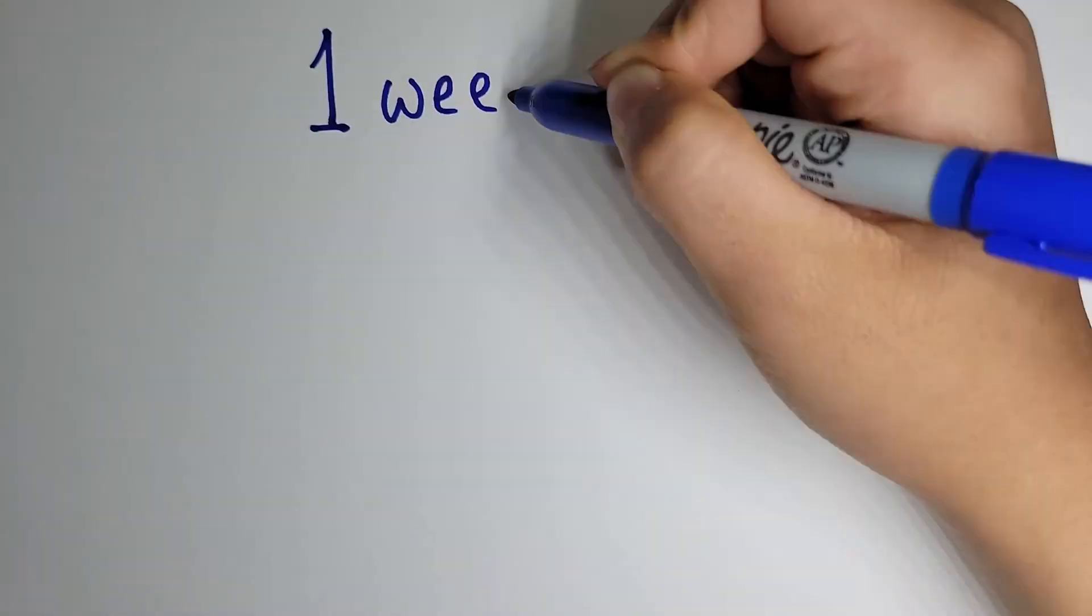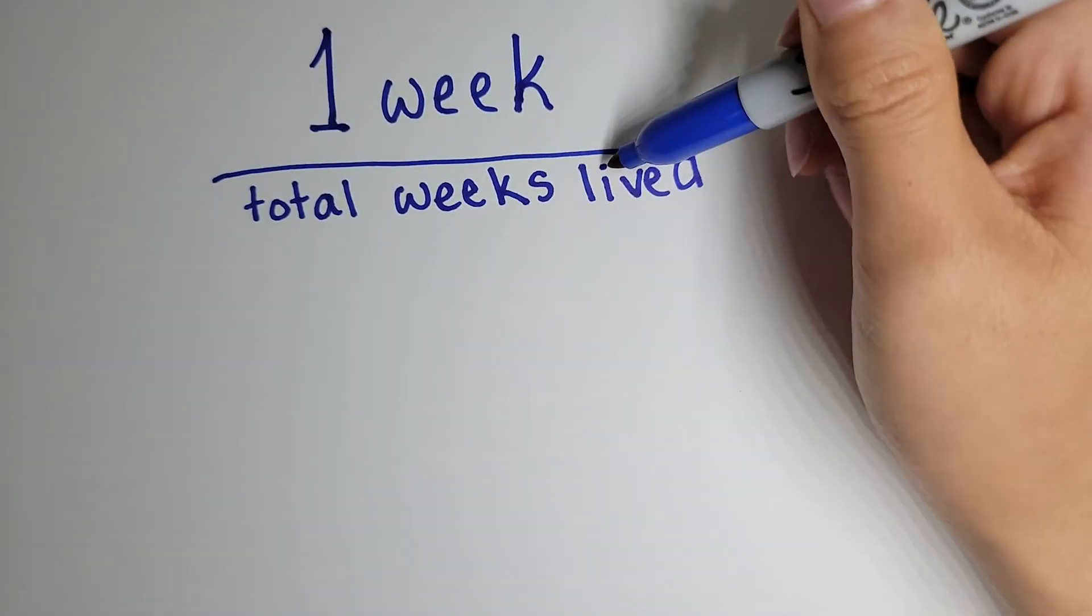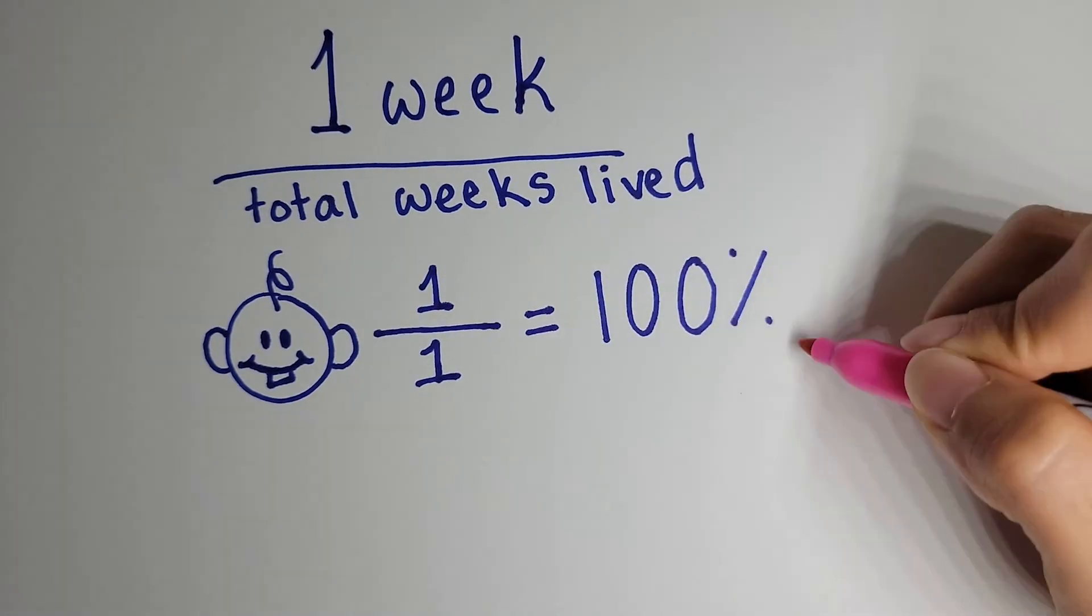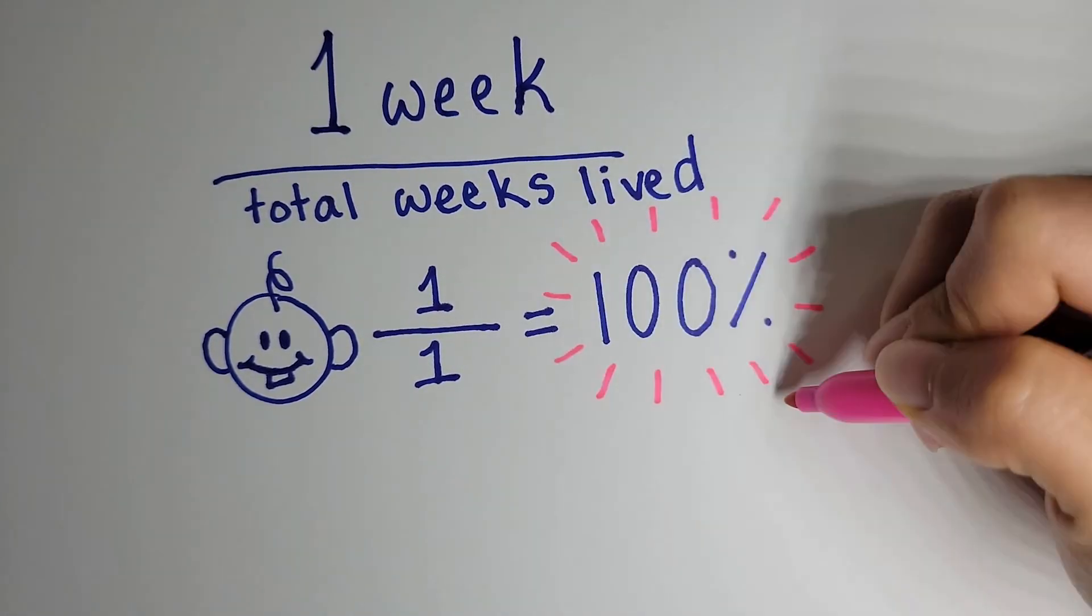Put this into perspective. A baby is only seven days old, in other words, a week. And the first week this baby has lived has been its whole entire life so far. Isn't that crazy?